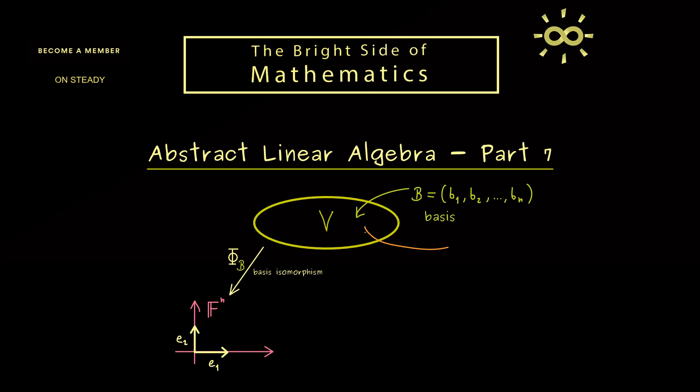And now we want to extend the whole thing by introducing a new basis C. Hence there we also have n elements and we call them c₁, c₂ and so on. So obviously this is not a problem at all. We just consider another basis and then we also have another basis isomorphism. Indeed the picture is exactly the same we also map V to our F^n. But now instead of b₁ we map c₁ to the first canonical unit vector. And then we map c₂ to e₂. And of course this continues which means this basis is now represented by the standard basis in F^n.